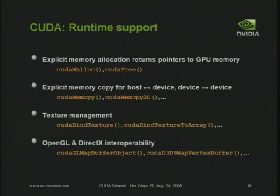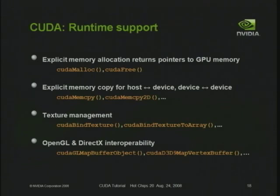On the host side, there is a runtime API to support managing memory and thread execution. There's a standard malloc/free/memcopy interface for allocating memory on the GPU device, putting data into it, and freeing it when done. There are also special functions for managing texture and for interoperating with graphics APIs. So if you're using CUDA in the context of a game, you might render something using a graphics API, copy those pixels into a place where a CUDA program can process them, then copy them back, bind as a texture, and render.